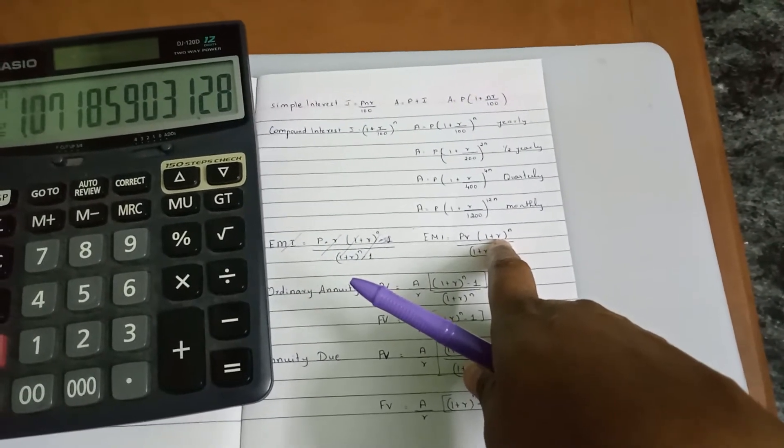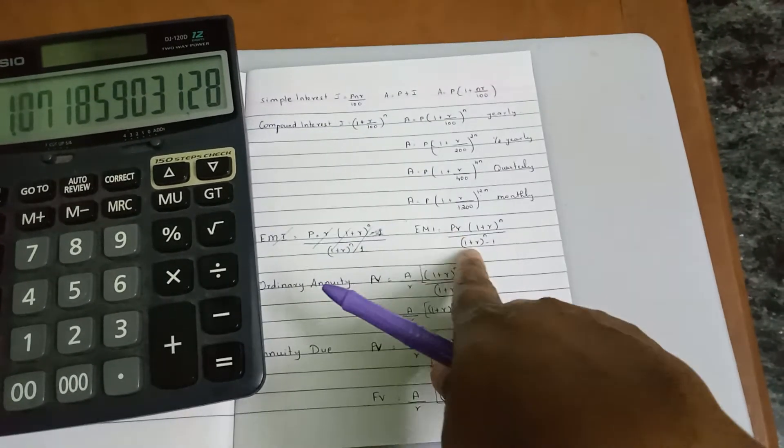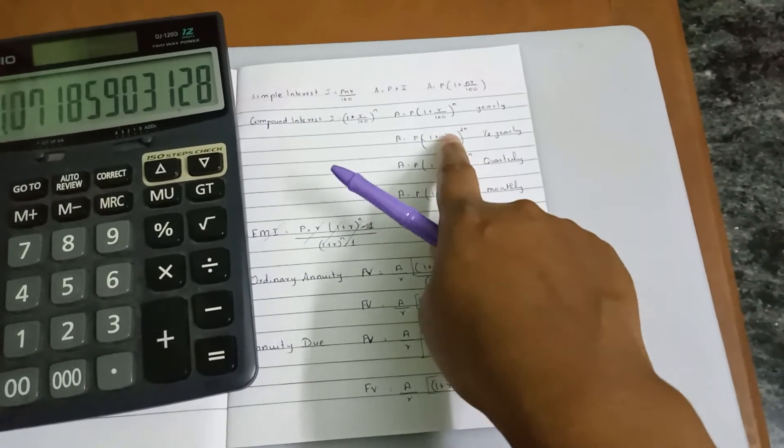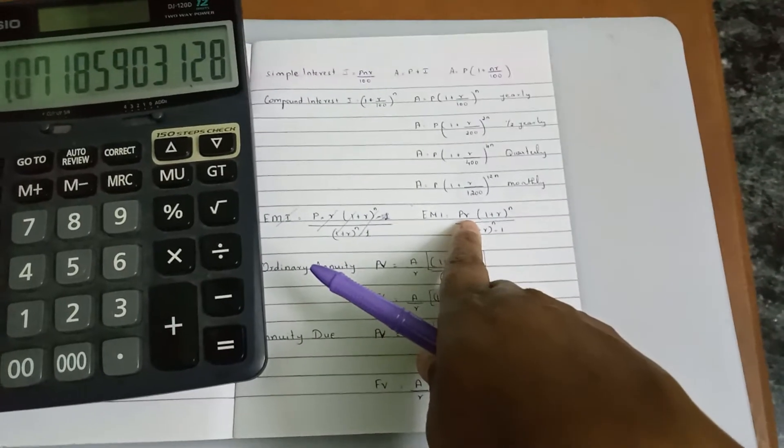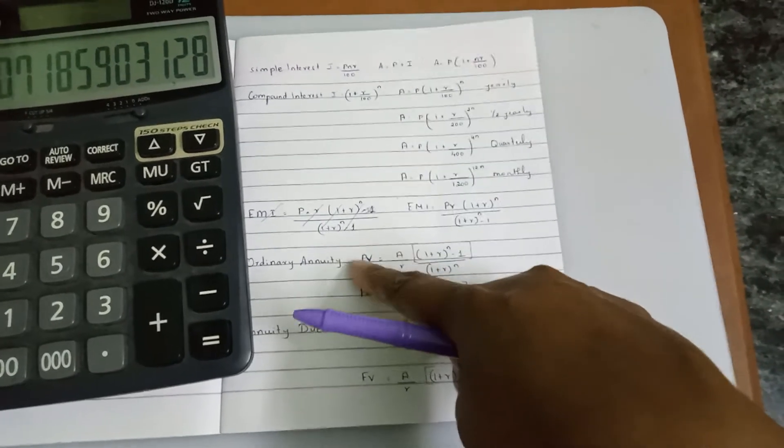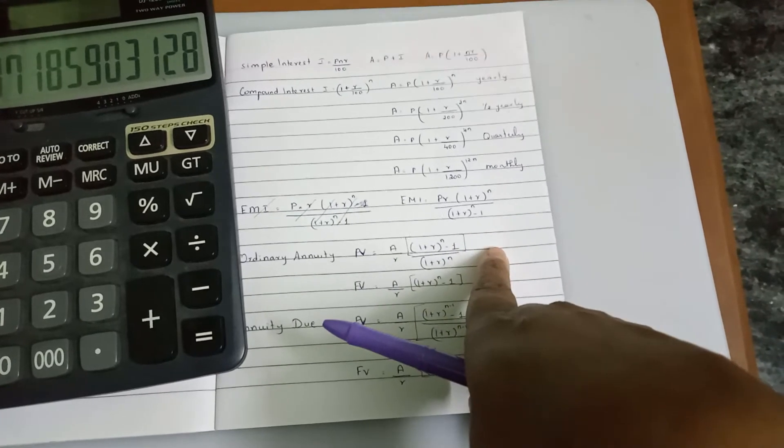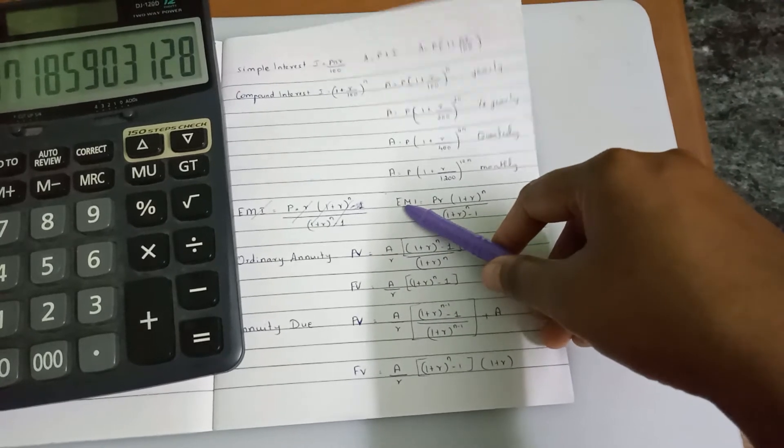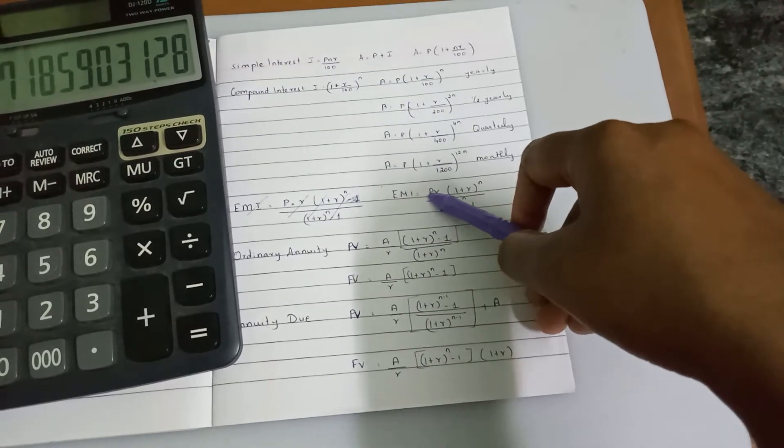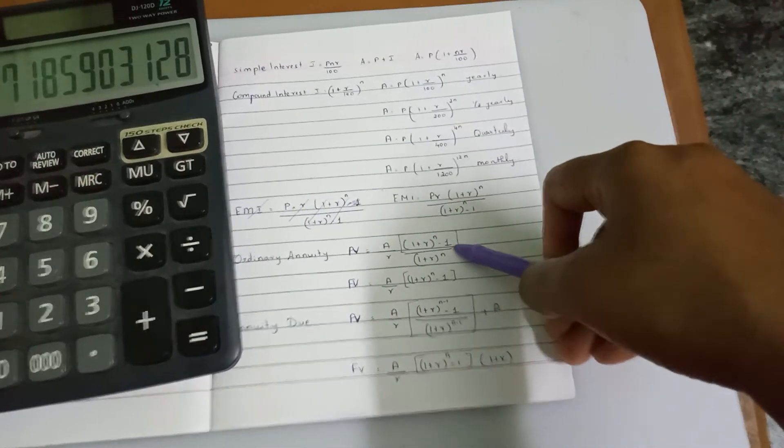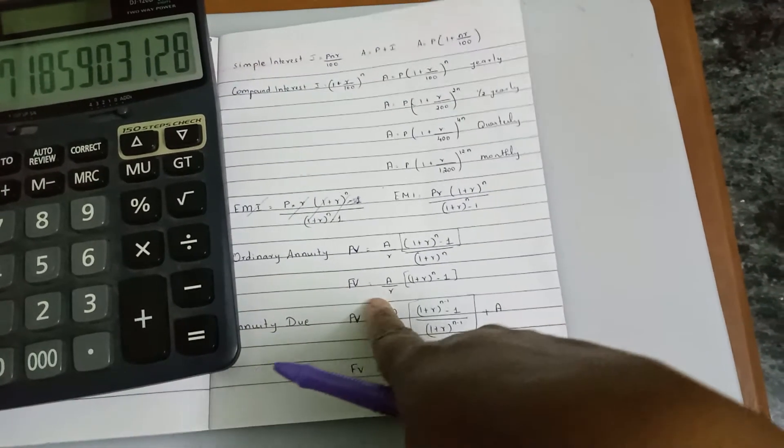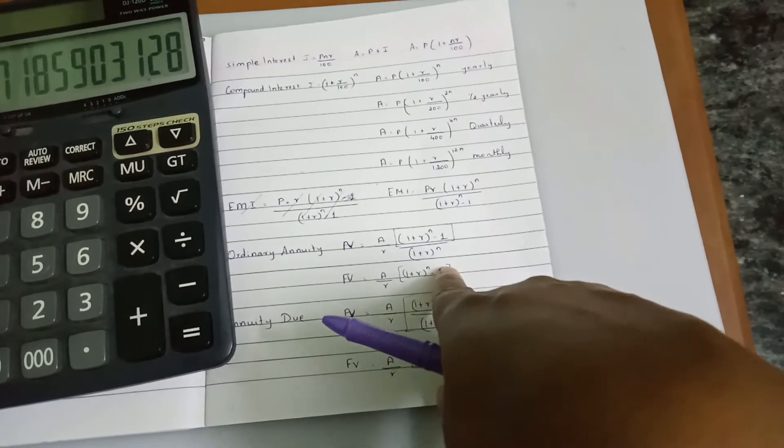This same method applies whether yearly, half-yearly, or quarterly. For present value, the formula is EMI times (1 plus R) to the power n minus 1 divided by R times (1 plus R) to the power n. For future value, it's A by R times (1 plus R) to the power n minus 1.